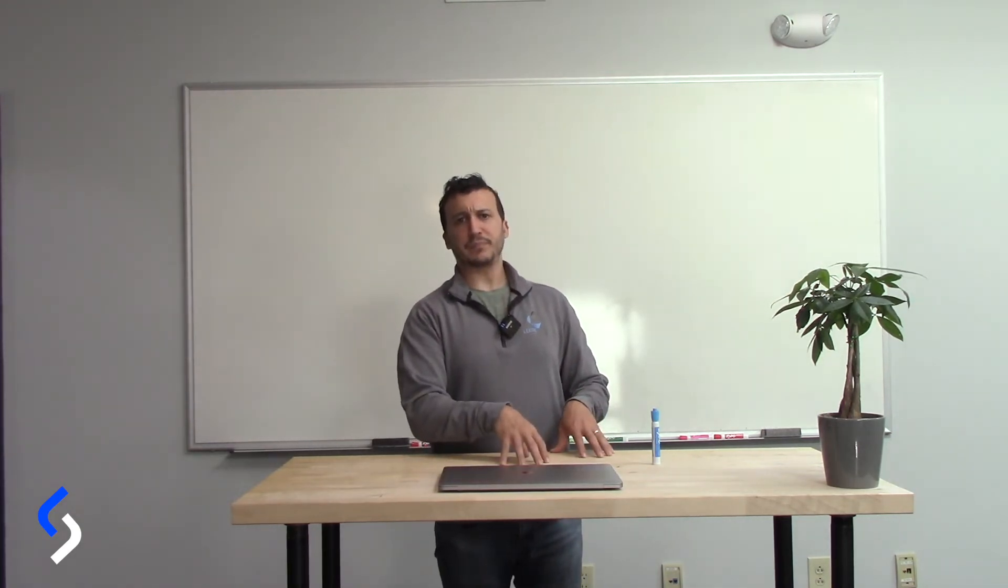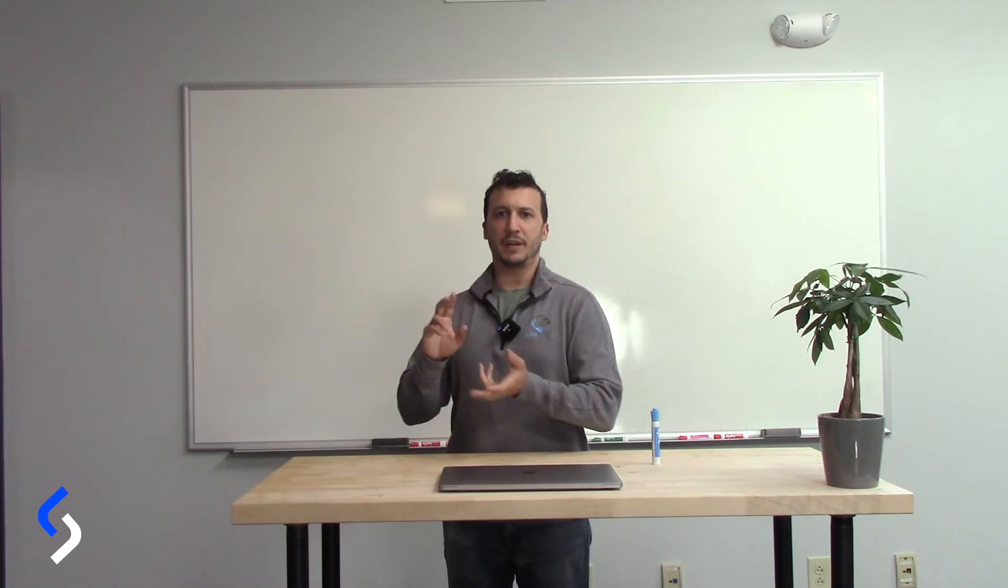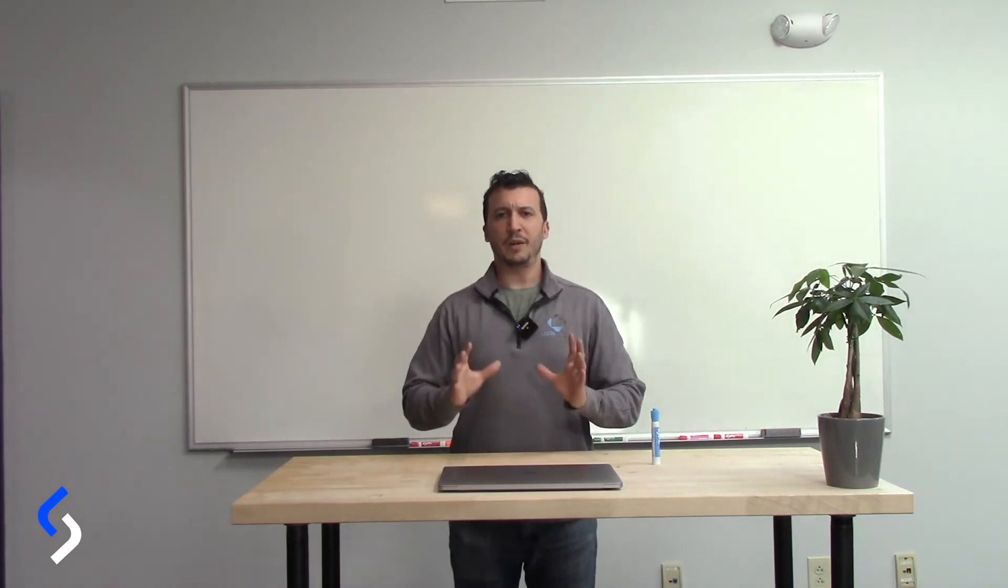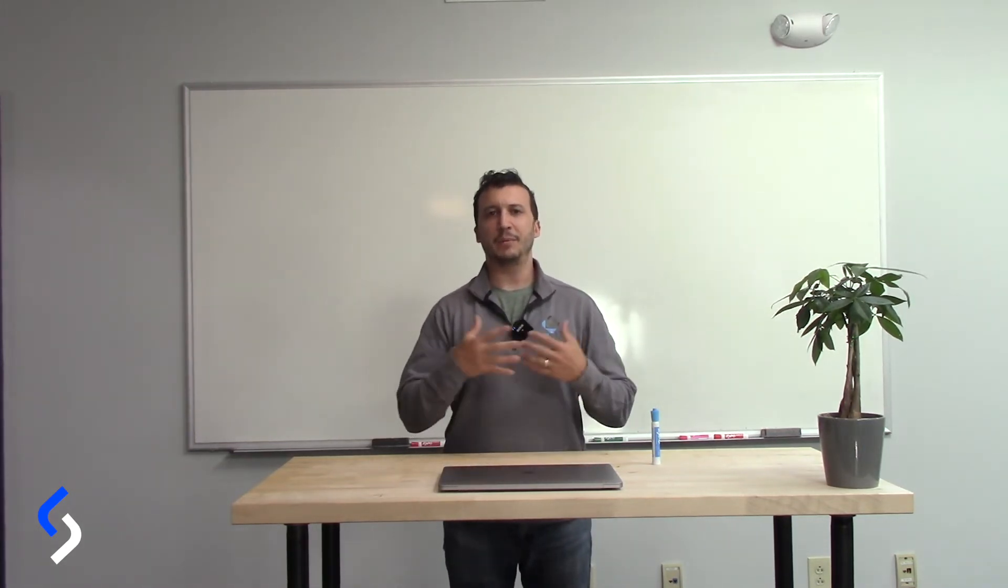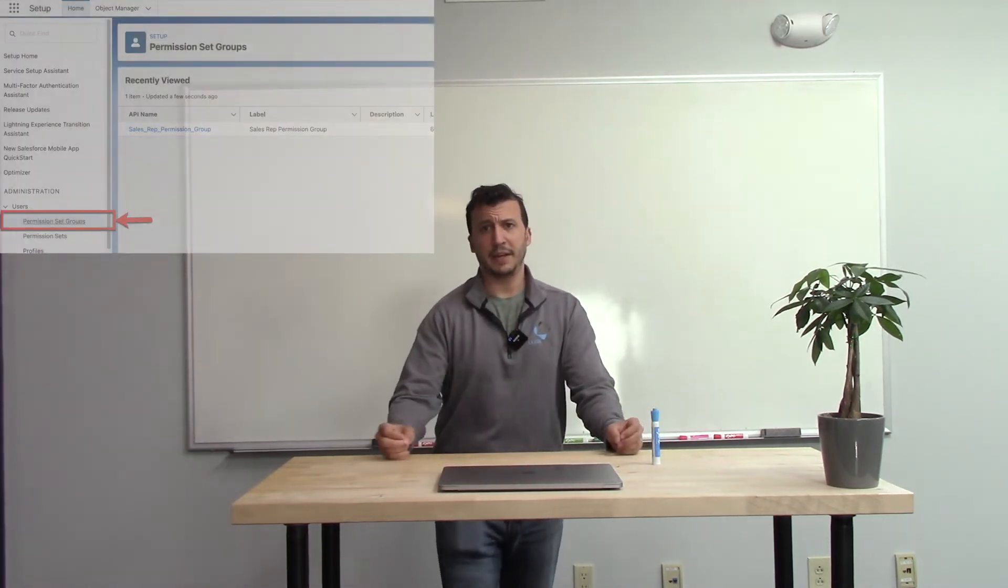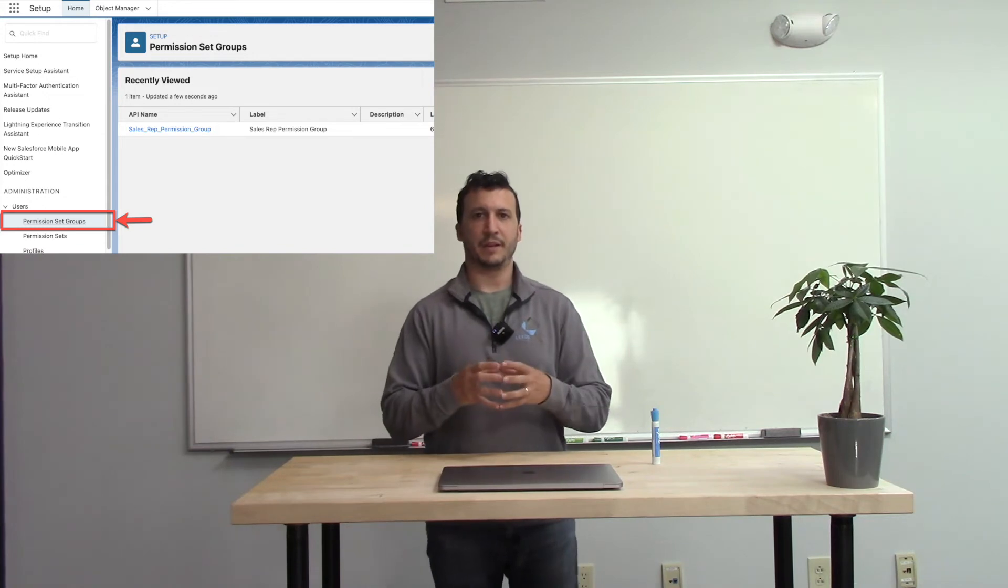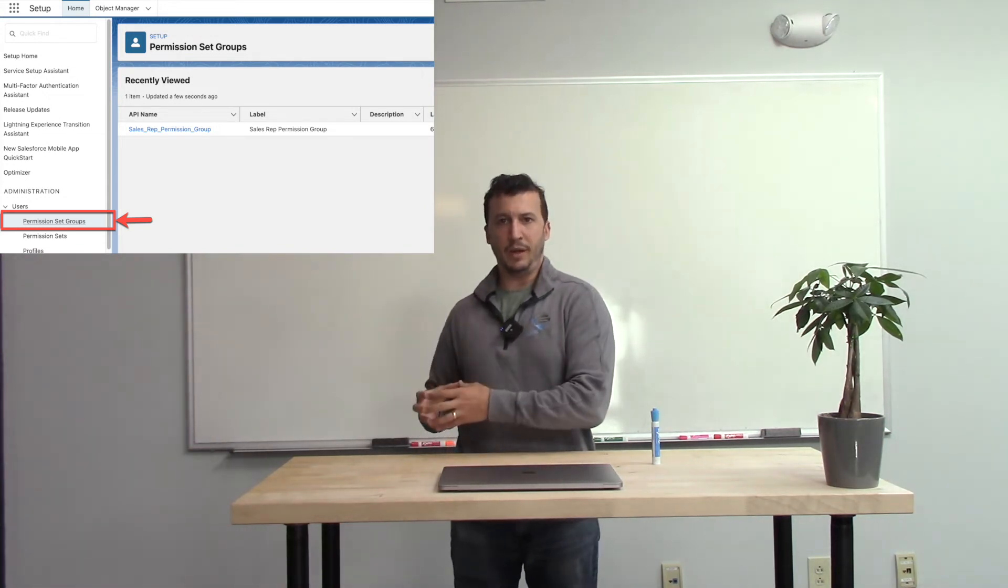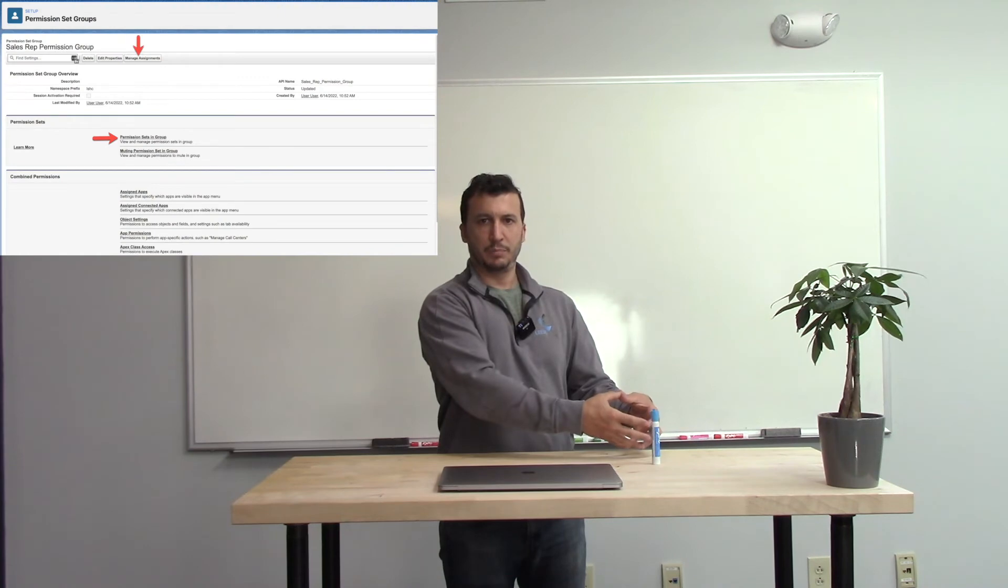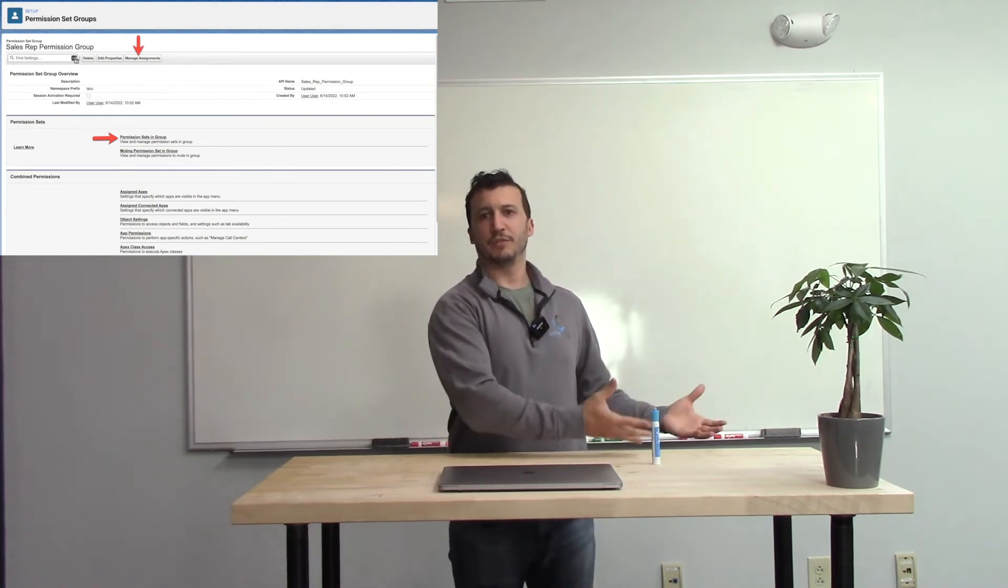Now they're also with managed packages and the permission sets that they introduce, we start getting into this mess of, well, a sales manager needs our sales permission base, but they also need these two permission sets from this managed package, those five permission sets from that managed package, they need some permission set licenses, which is slightly different. And we want to make sure that it's really easy to onboard these users. But now we have this big mess. Every user needs a whole series of assignments. This is where permission set groups come in handy. Permission set groups basically allow us to take permission sets and bundle them together into a group. That way, we can just assign the user the permission set group, which grants them all the permissions to all the permission sets within that group.